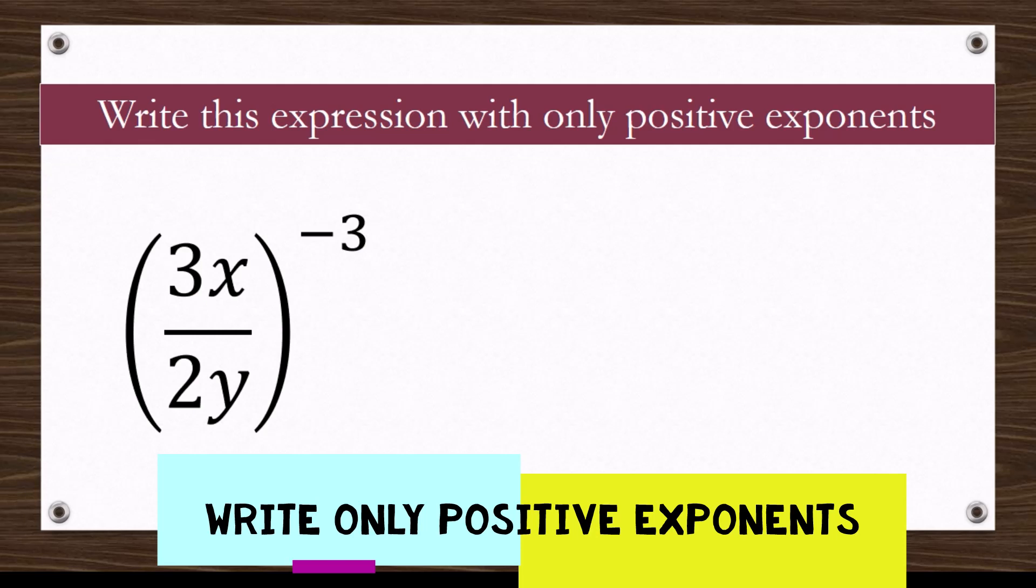The question is asking to make this expression have only a positive exponent. The exponent here is minus 3, and we want to change the sign from negative to positive. When we do that, the number on the bottom may become on the top for you to change the exponent to positive.